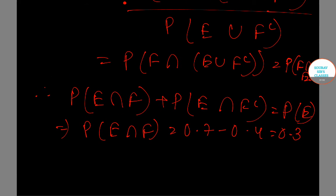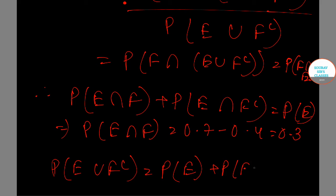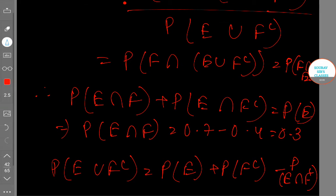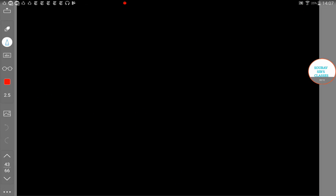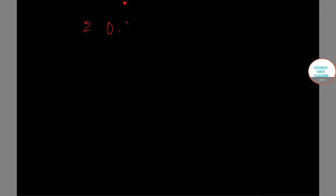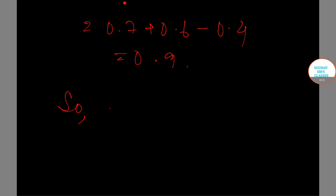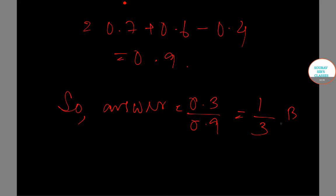And finally, P(E ∪ F') = P(E) + P(F') − P(E ∩ F') = 0.7 + 0.6 − 0.4 = 0.9. So our final answer will be 0.3 / 0.9 = 1/3. The correct option is B.